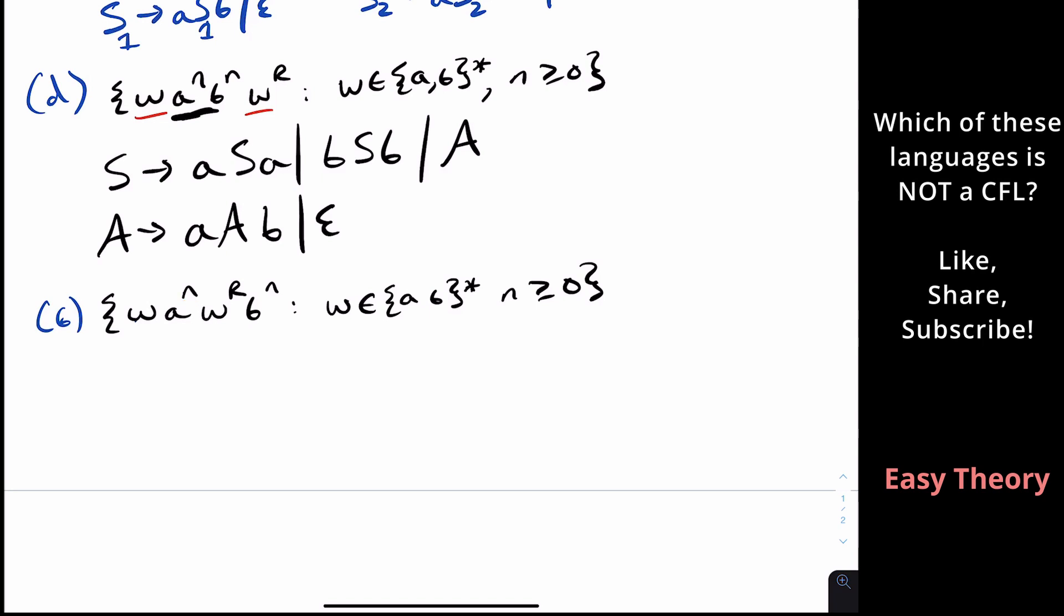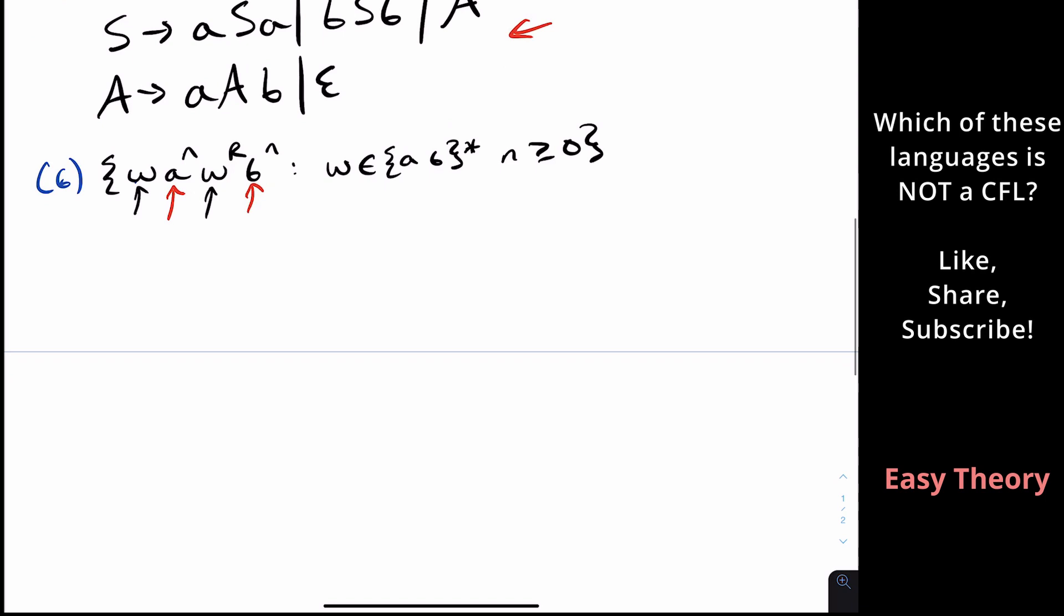So let's talk about B. So why is B not context-free? It's mainly because the W and the W reverse parts, as well as the A to the N, B to the N parts are split across. They're not next to each other. And so you may be thinking, okay, well, this grammar doesn't work that we just did. So therefore, no grammar works. But that's not necessarily true. So what we can do is we can make the W string here, we can make it so long, so that the A to the N part is really far away from the B to the N part.